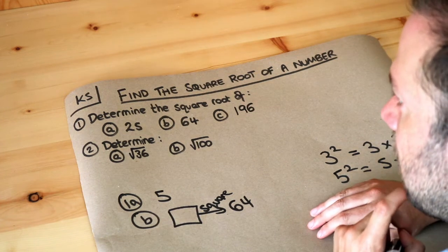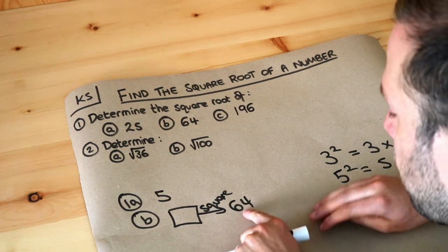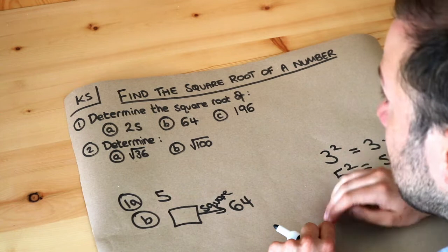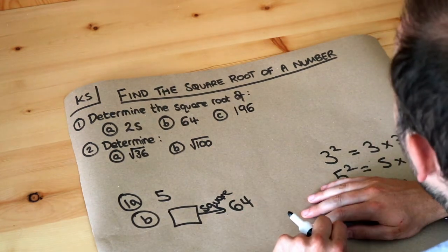Well 6 times 6 is 36. So 6 squared is 36, that's too small. 7 squared is 7 times 7 which is 49, still too small, we want 64. 8 times 8,